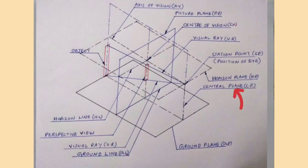And finally, the central plane is an imaginary plane perpendicular to both ground plane and picture plane and passes through the center of vision and station point, while containing the axis of vision.